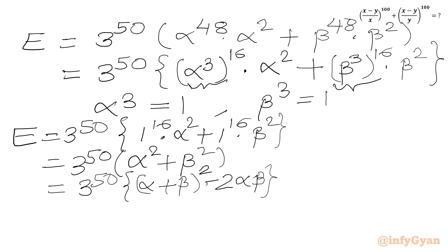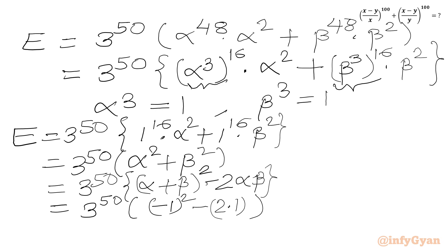We know that alpha times beta is 1 and alpha plus beta is negative 1. So we get 3 to the power 50 times, in bracket, negative 1 whole squared minus 2 times 1, which gives 3 to the power 50 times 1 minus 2 equals 3 to the power 50 times negative 1. So the final answer is negative 3 to the power 50.